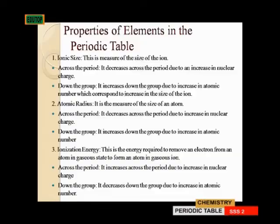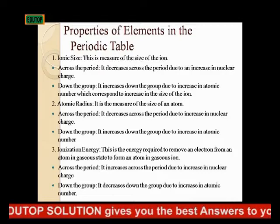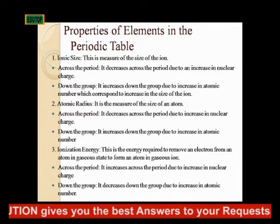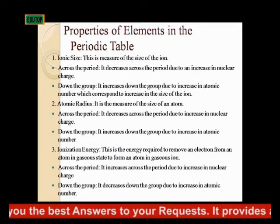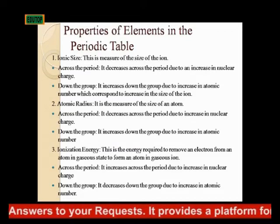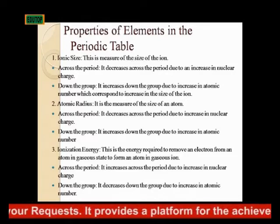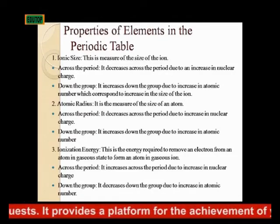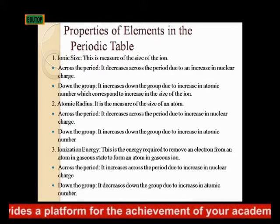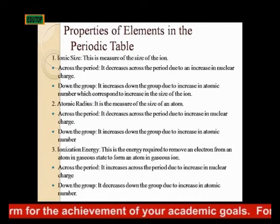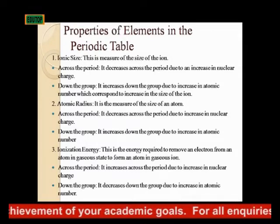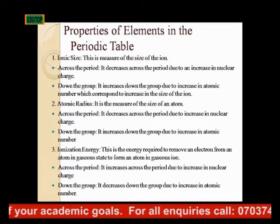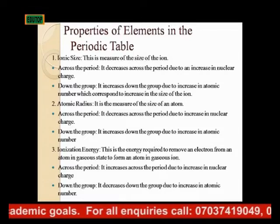Ionization energy is the energy required to remove an electron from an atom in a gaseous state to form a gaseous ion. It is the third property of elements in the periodic table — the first was ionic size, the second was atomic radius, and the third is ionization energy. Across the period it increases due to increase in nuclear charge; down the group it decreases due to increase in atomic number.